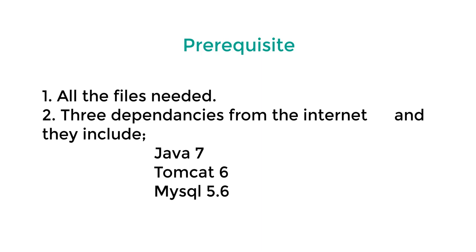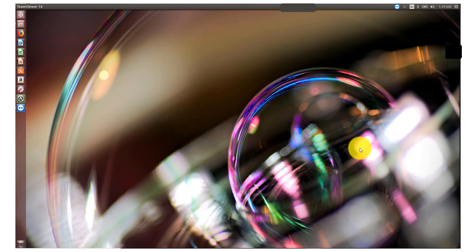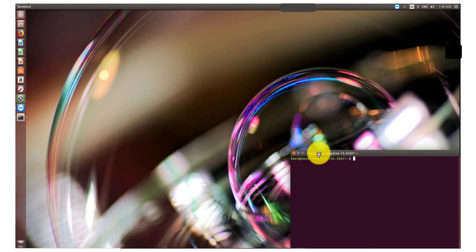This is a brand new installation of Ubuntu desktop 16.0. I'm going to show you the first step we need to take before the actual installation. The first thing you need to do is update the operating system. To open the command window on Ubuntu, you press Ctrl+Alt+T, which will launch the terminal window where we can issue the commands needed for our installation.